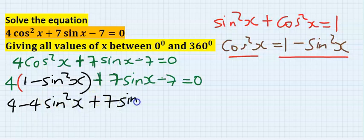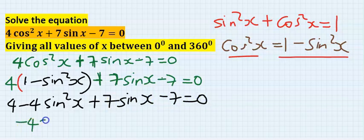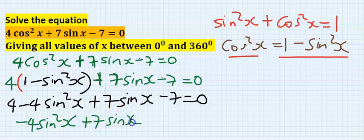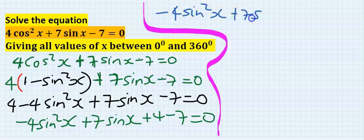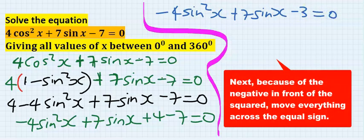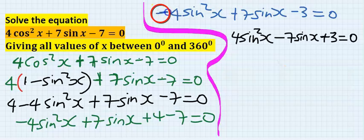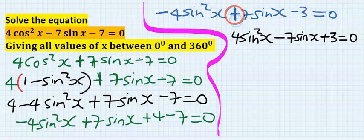Seven is zero: minus four sine squared x plus seven sine x, plus four minus seven equals zero. Three is zero. We now take all the values over to the other side.